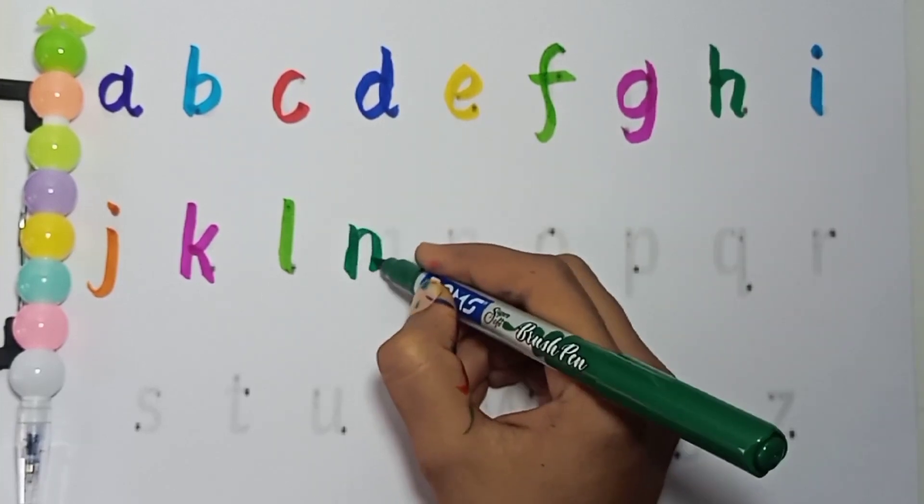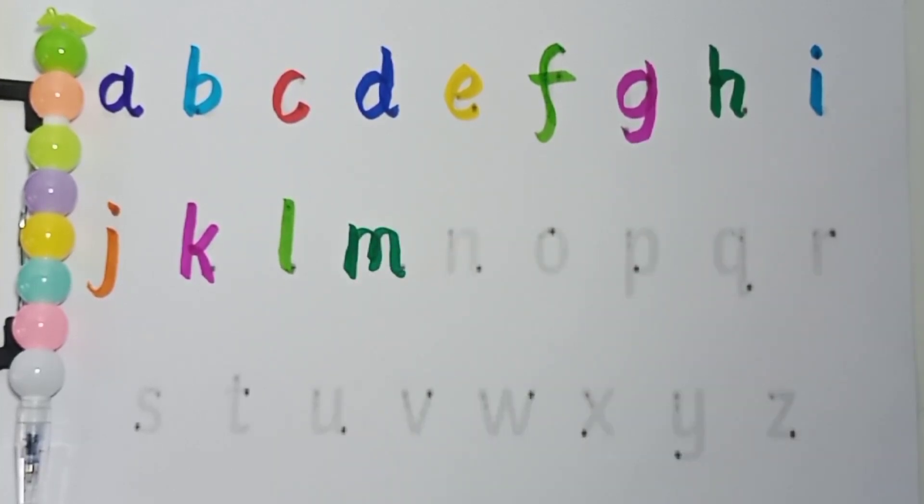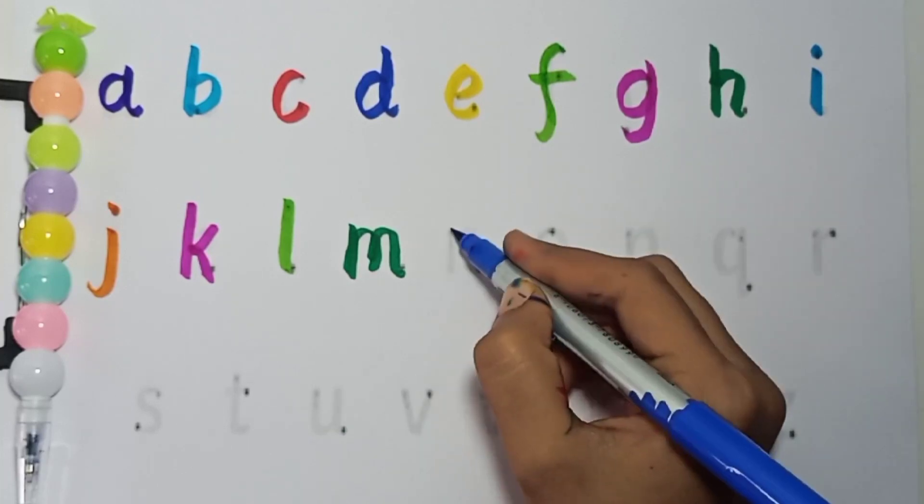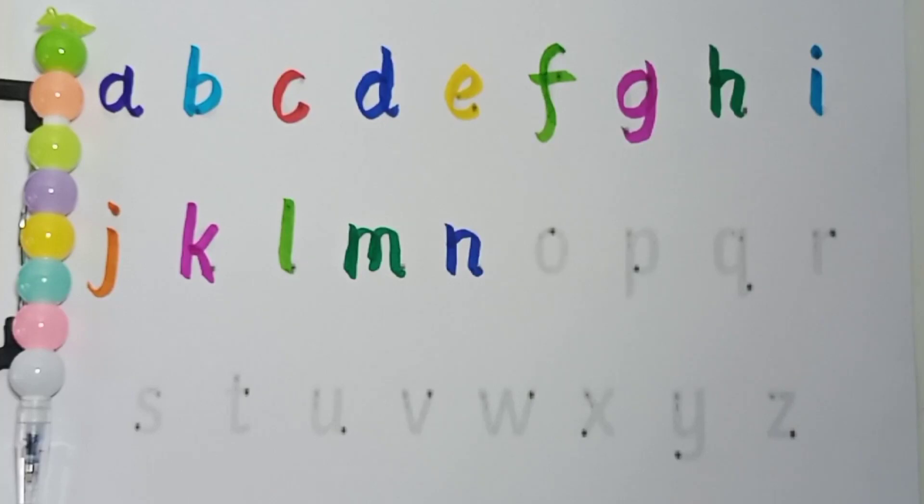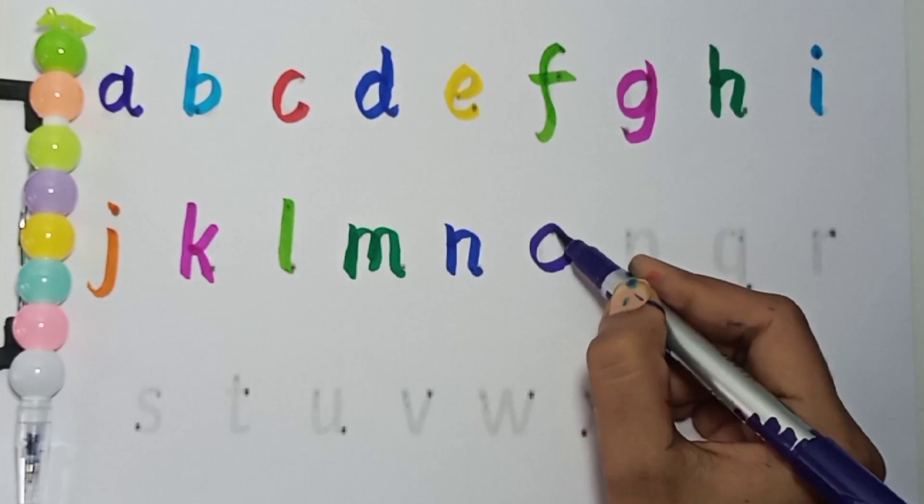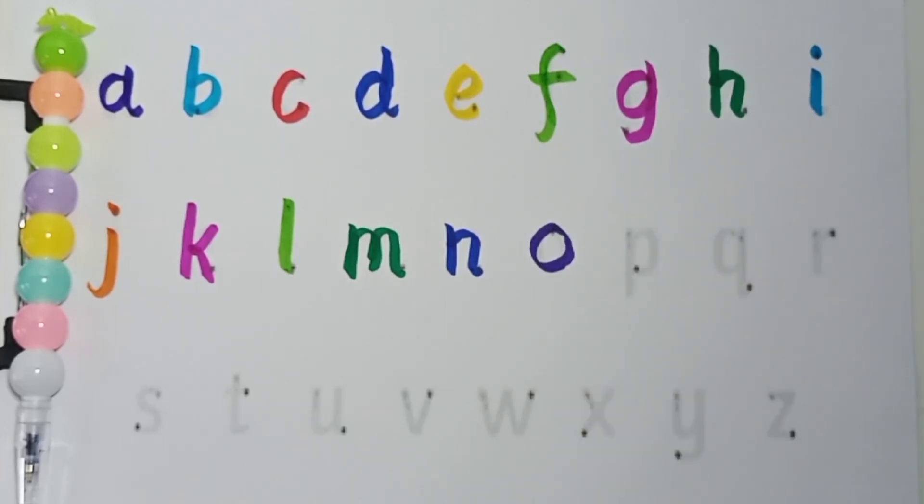Dark green color, M, M for mango. Dark blue color, N, N for nest. Purple color, O, O for orange.